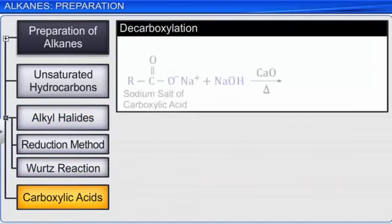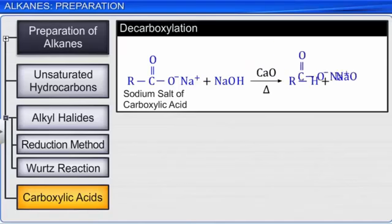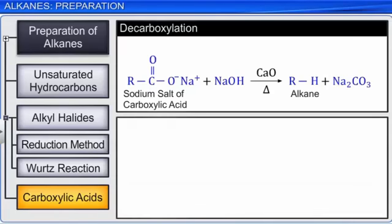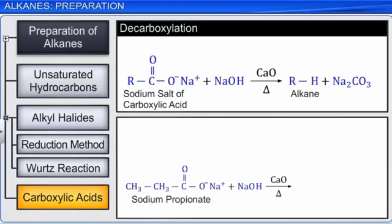Now let's see how alkanes can be prepared from carboxylic acids. Sodium salts of carboxylic acids on heating with soda lime give alkanes with one carbon atom less than the parent carboxylic acid. Soda lime is a mixture of calcium oxide and sodium hydroxide. As this reaction involves the elimination of carbon dioxide from a carboxylic acid molecule, the process is known as decarboxylation. For example, sodium propionate on heating with soda lime gives ethane.